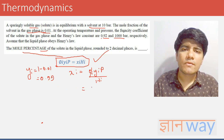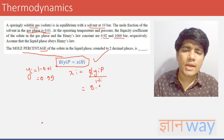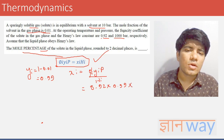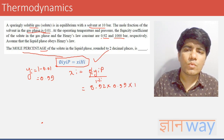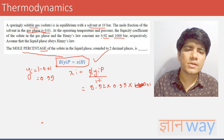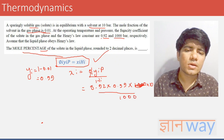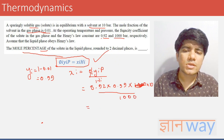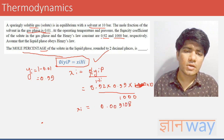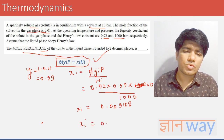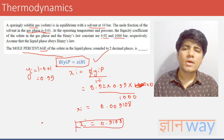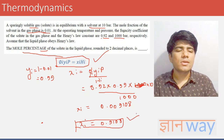Substituting the values: fugacity coefficient φ = 0.92, yi = 0.99, pressure P = 10 bar, Henry's law constant Hi = 1000 bar. So xi = (0.92 × 0.99 × 10) / 1000 = 0.009108. As a mole percentage, xi equals 0.9108%. This is the mole percentage of the solute in the liquid phase.